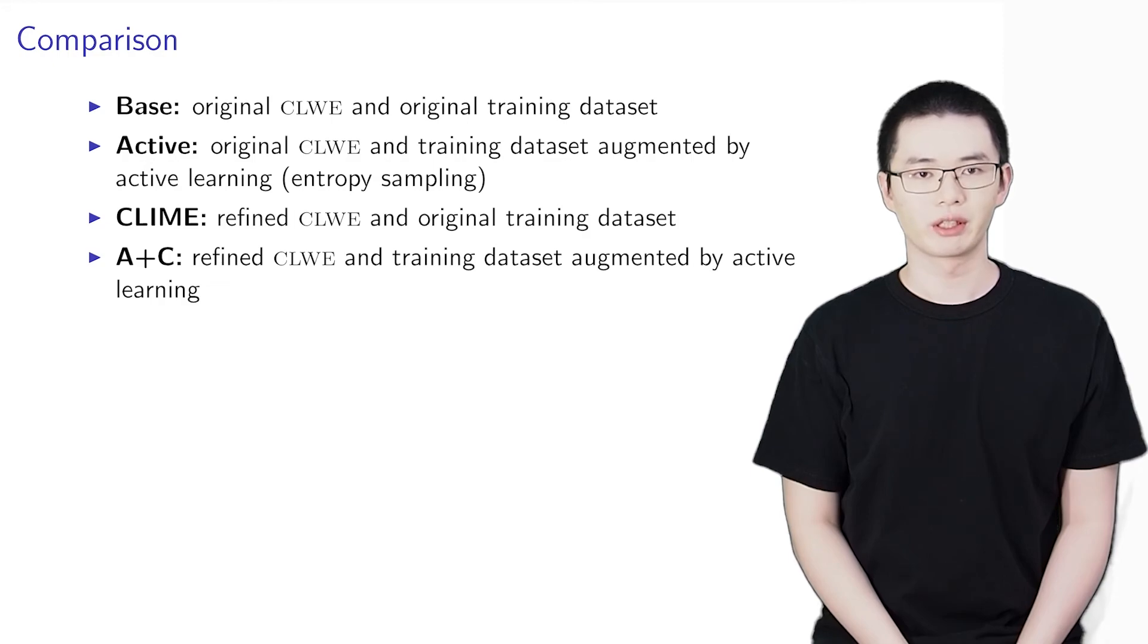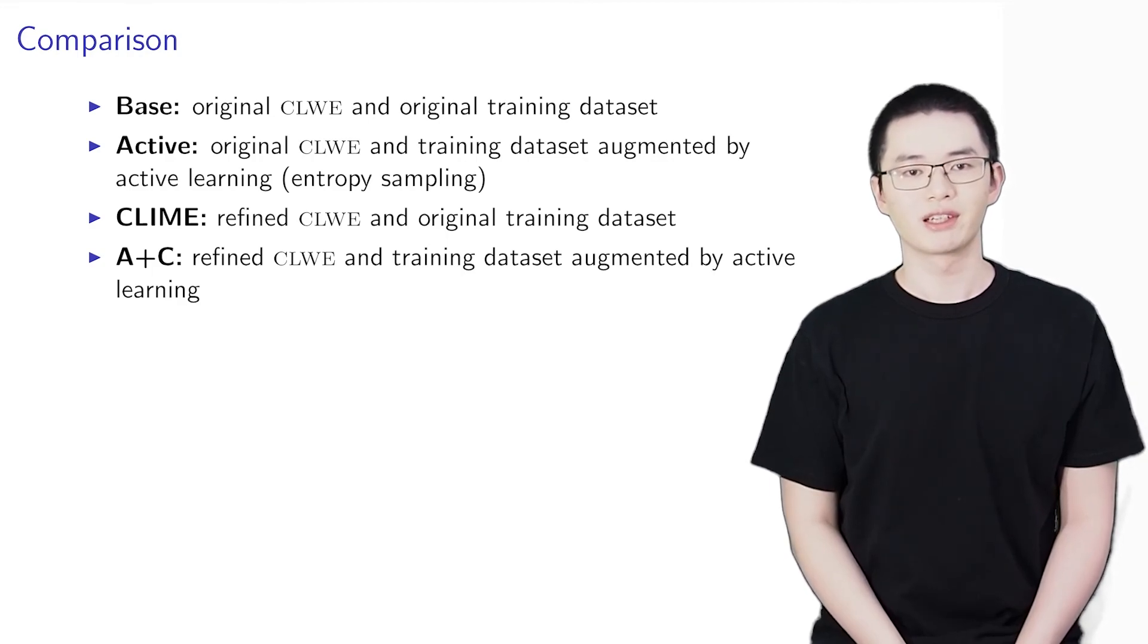the A+C model combines CLIME and active learning. The combination may be helpful because the two methods focus on different levels in the interaction. Specifically, we allocate half of the user interaction time to active learning and the other half to CLIME.